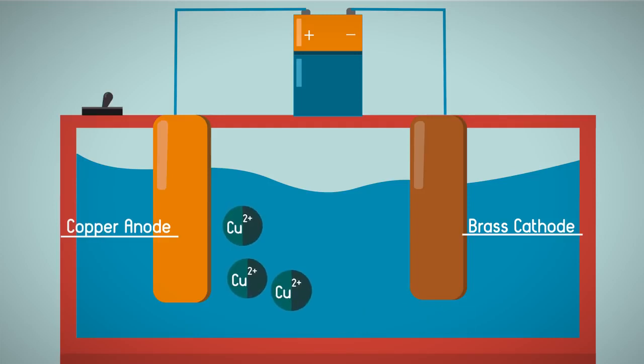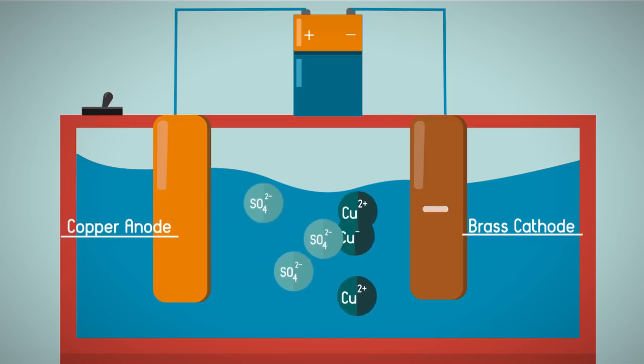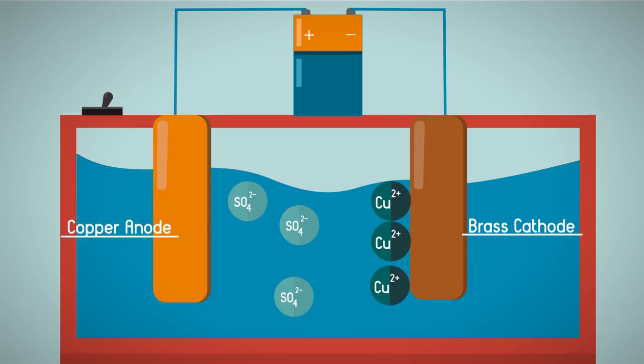Copper sulfate solution contains blue copper ions and colorless sulfate ions. The copper ions are positively charged and so are attracted to the negatively charged brass cathode. The copper ions deposit onto the brass, producing the thin copper plate.